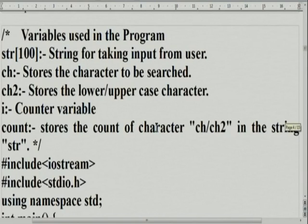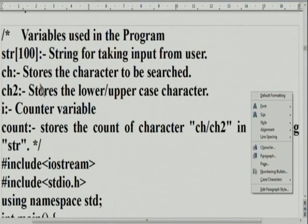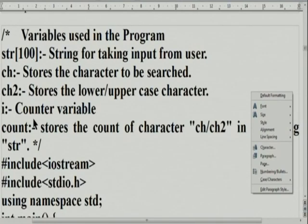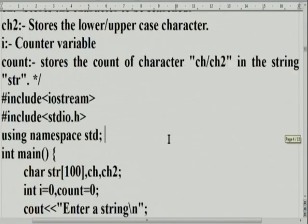These are the variables used in the program. STR with size 100 is the string for taking input. CH stores the character to be searched. CH2 stores the lower or upper case equivalent. I is a counter variable — I had used K in the rough draft, which is fine. Count stores the count of characters CH or CH2 in the string. Let us look at the program now.